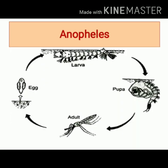Anopheles mosquito has four stages in its life history: egg, larva, pupa, and adult stage. Eggs are laid singly and show the presence of lateral floats. The larva remains parallel to the water surface and does not have a siphon tube.